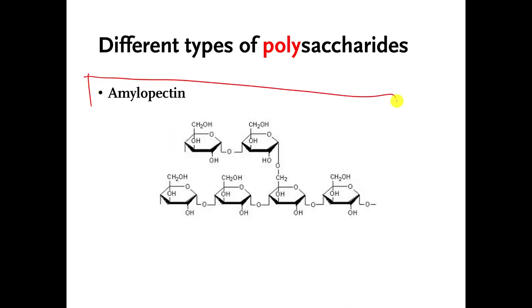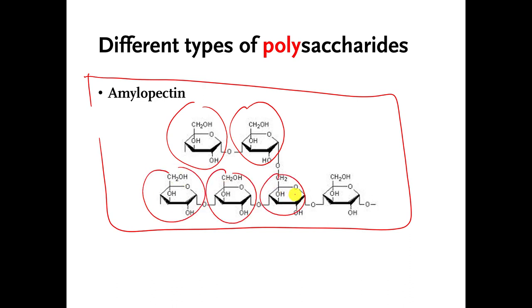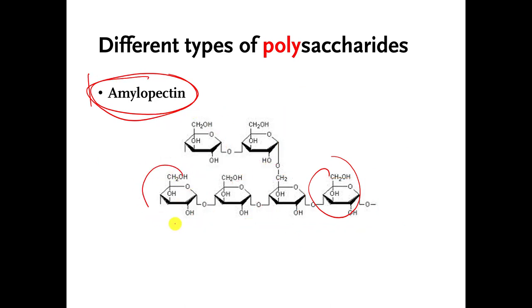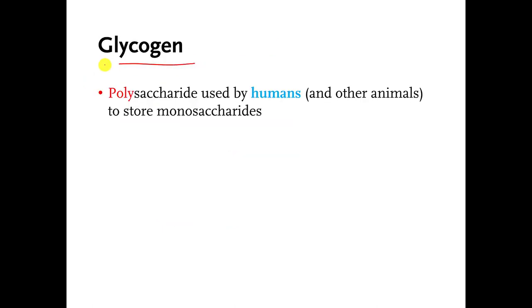This is a polysaccharide called amylopectin. This is also glucoses stuck to each other over and over again, but you can see there's a branch here. Amylopectin is commonly found in a lot of fruits. One thing that I should point out, you're connecting a bunch of glucoses over and over again. The way that you connect them is by what, everybody? That's right, dehydration synthesis. I'm glad you all got that right.